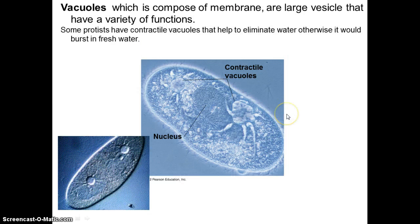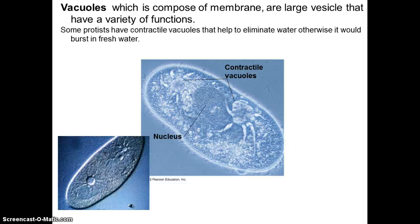Vacuoles — think of them as a bag or a sack. A vacuole can have many functions. For example, in a paramecium that lives in fresh water, it pumps out water and is called a contractile vacuole. Some vacuoles store water, store food, or pigments — they have a variety of functions depending on the cell. For example, a fat cell would have a fat vacuole.